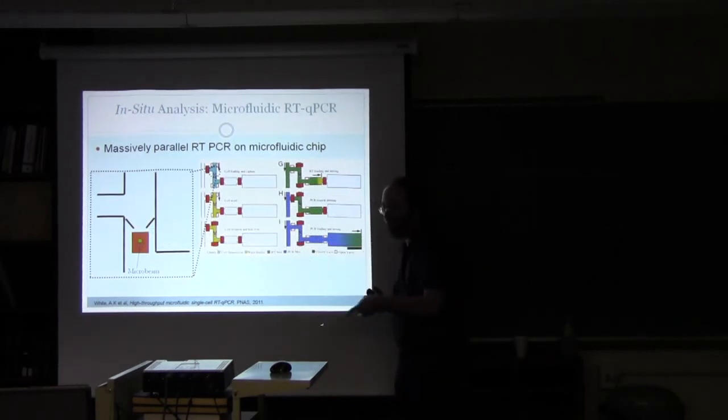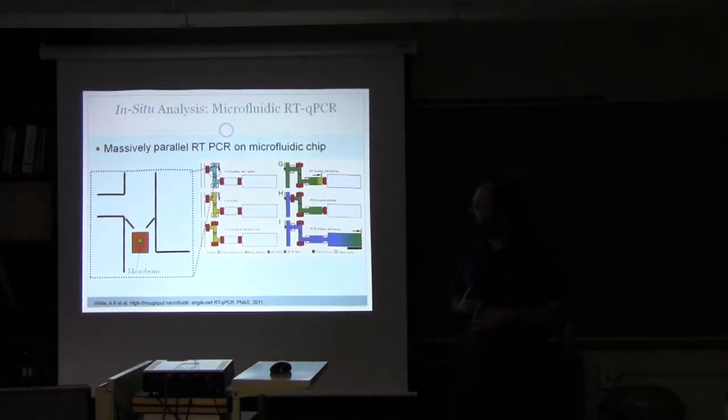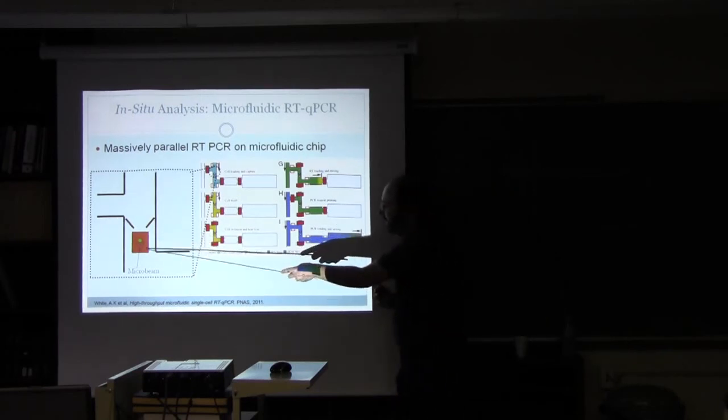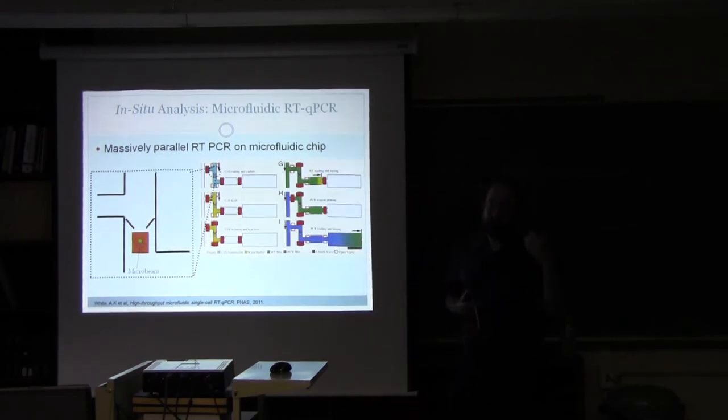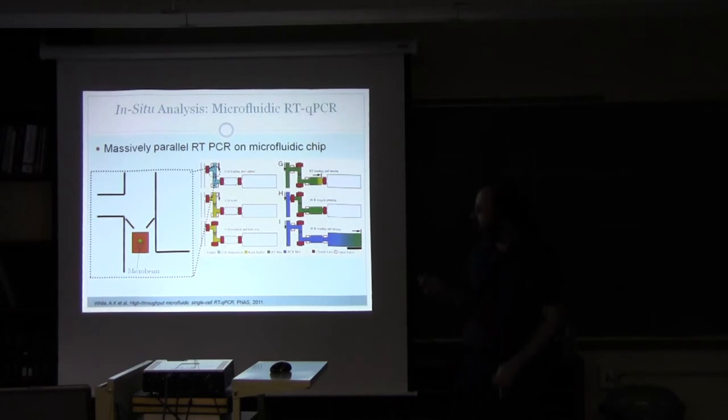You trap the cells here, irradiate them, and then you can either keep them for a certain amount of time and do a time series depending on which cells are released at which time, or look at different gene products, or the same gene product from different cells looking at intercellular variation.